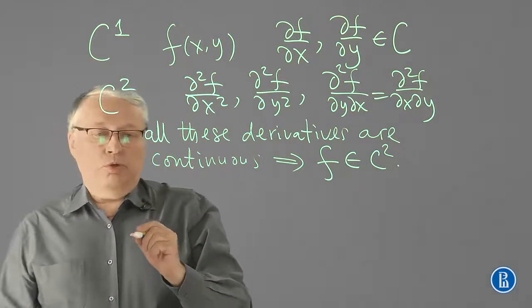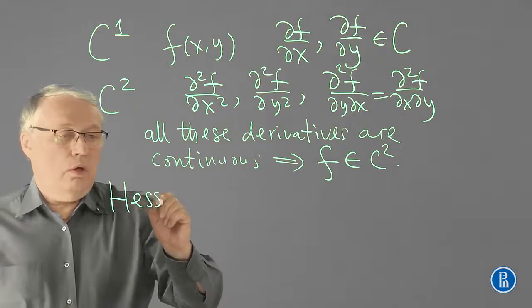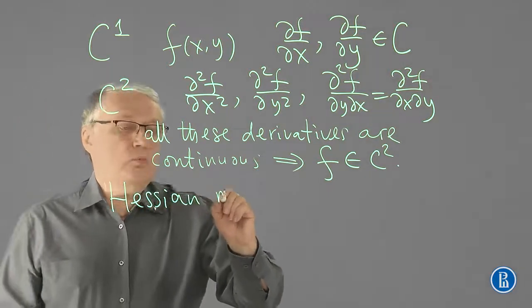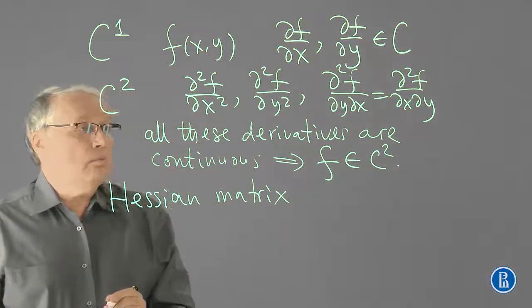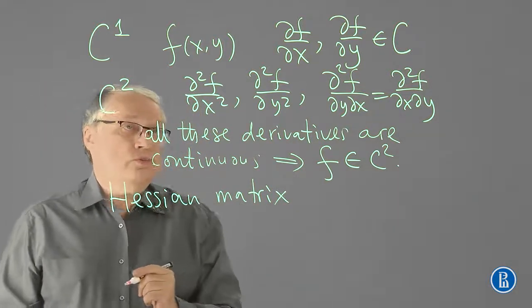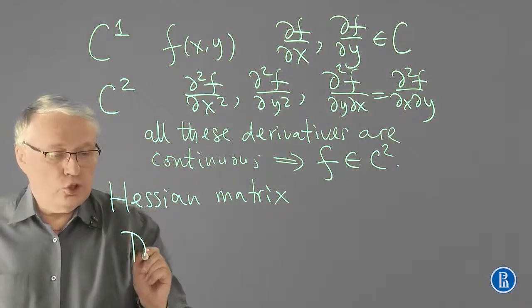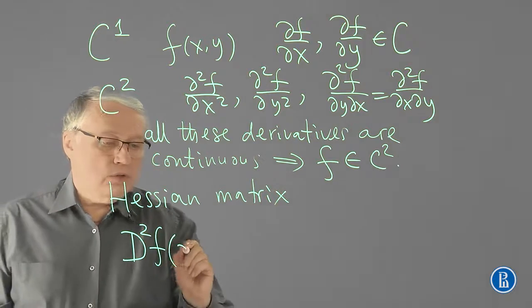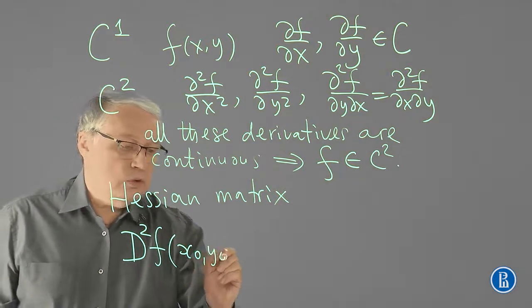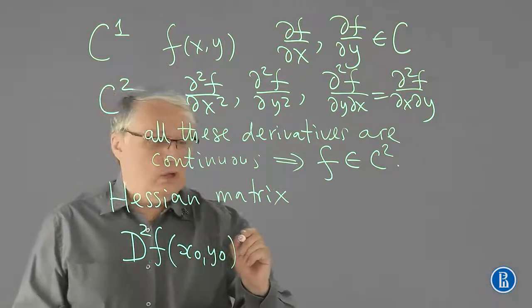Let me introduce a matrix, which is called Hessian matrix, or simply Hessian, whose entries are second-order derivatives calculated at some point. Usually, we use notation d squared f, taken at x0, y0. This is a point where all these second-order derivatives are calculated.